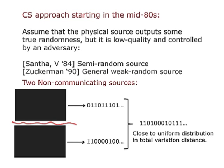There are two ways you can use these low-quality sources of randomness. One way assumes you have multiple devices — say two or more — that you can physically isolate from each other so they don't talk to each other. Given the outputs of two such devices, can you combine them to create a string that is very close to uniformly random? The other approach uses what are called extractors: you take the output of this box, add in log n truly random bits, and massage these together to get an output which is extremely close to random in total variation distance.